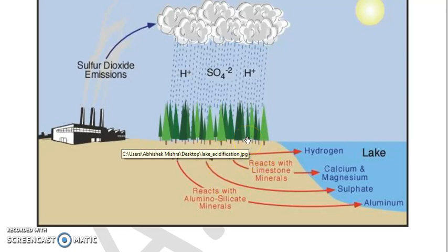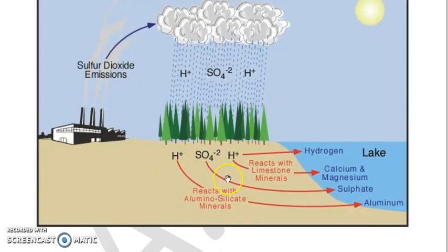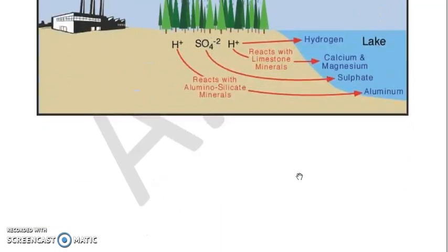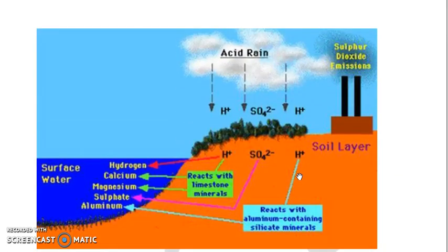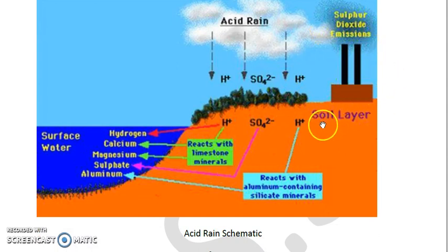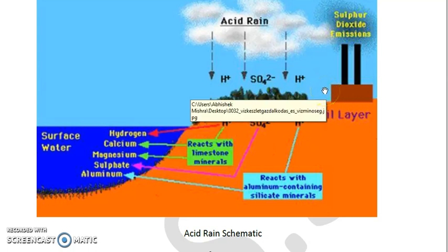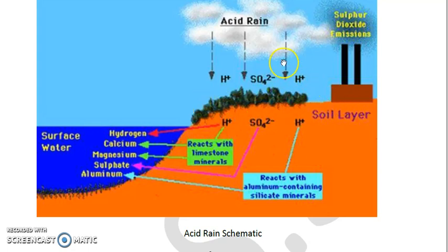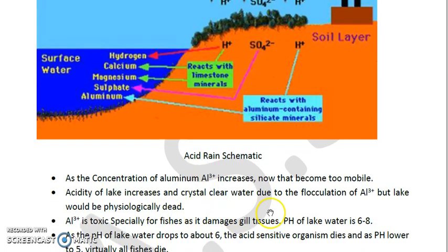Calcium²⁺ and magnesium²⁺ ions start leaching from the soil and go deeper into the earth's layers, making the soil poor in nutrients. As pH goes down, ions like aluminium³⁺ also become more mobile and available for plants. The concentration of aluminium³⁺ increases, becoming highly mobile due to acidic pH. The acidity of lake water also increases from acid rain, and the water will appear crystal clear due to flocculation caused by aluminium³⁺.